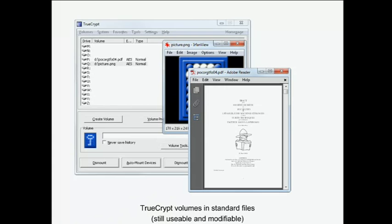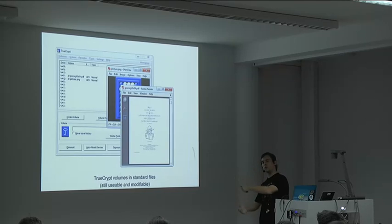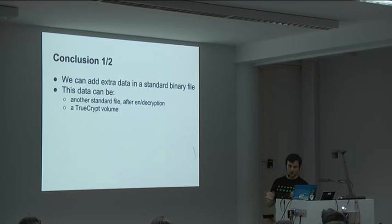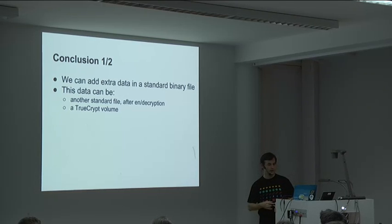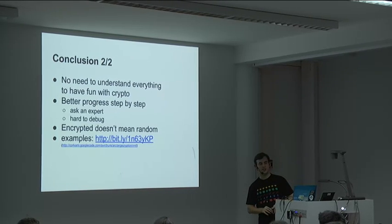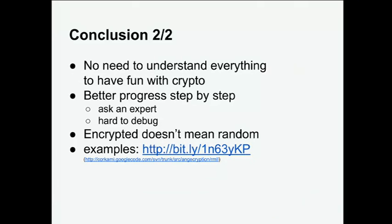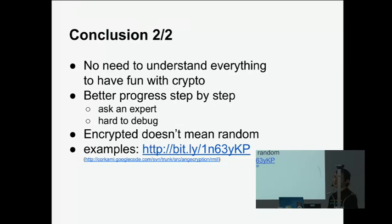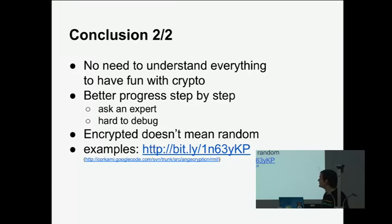The same technique we use with the two-file encryption to make encrypted data ignored can be used to hide a TrueCrypt volume. Conclusion: for both cases, we can add extra data in a standard binary file. In one case, this data can be another standard file after encryption or decryption — or a TrueCrypt volume. As you can see, I still don't know how AES works inside — I just know encryption, decryption, key. Good enough. But it's better to progress step-by-step with crypto, or ask an expert. Once it's encrypted but it's random again instead of a valid PNG — what did I do wrong? Difficult to debug. But once again: encrypted doesn't mean random. The proof of concept files are available.